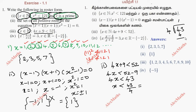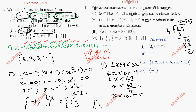43 divided by 4 gives 10.75. So x is less than 10.75. Since x belongs to natural numbers, we list: 1, 2, 3, 4, 5, 6, 7, 8, 9, 10. So the roster form includes all natural numbers up to 10.